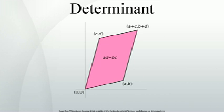The determinant of real square matrices is a polynomial function from R^{n×n} to R, and as such it is everywhere differentiable. Its derivative can be expressed using Jacobi's formula: d(det(A)) = Tr(adj(A) dA), where adj(A) denotes the adjugate of A. In particular, if A is invertible, we have d(det(A))/dA = det(A)·(A⁻¹)ᵀ. The special case where A is the identity matrix yields the trace. This identity is used in describing the tangent space of certain matrix Lie groups.